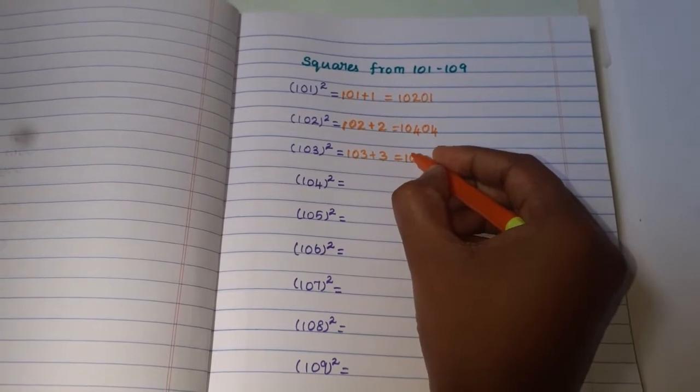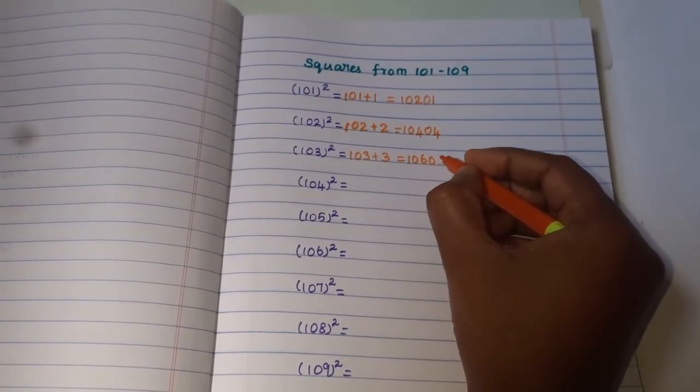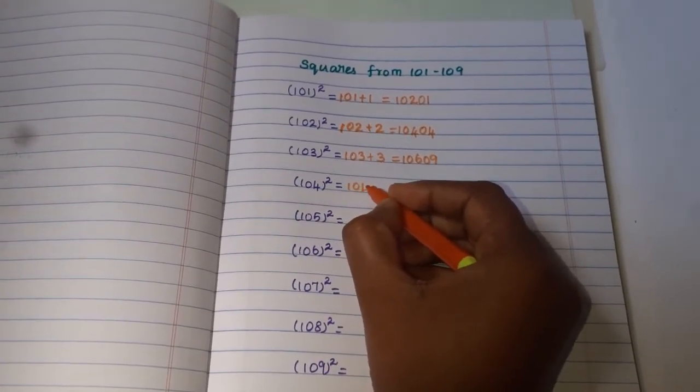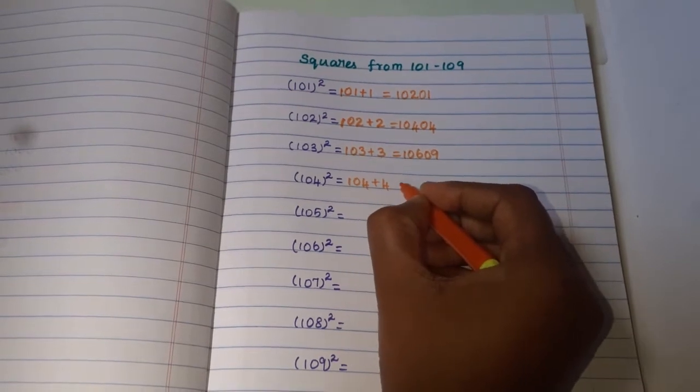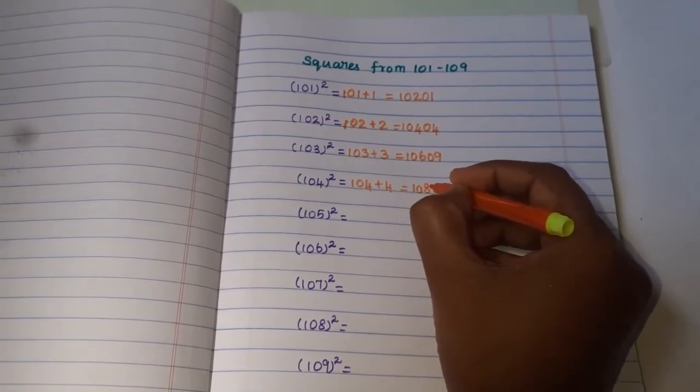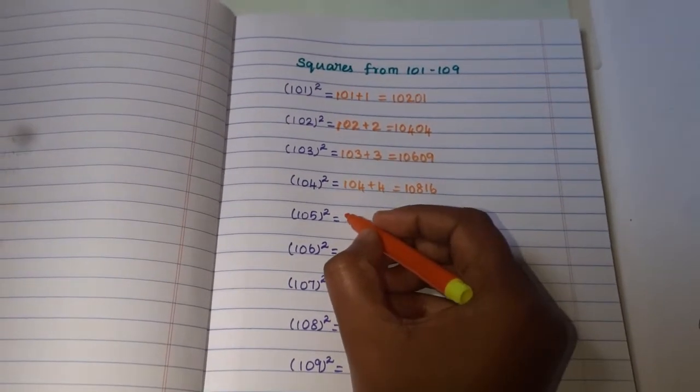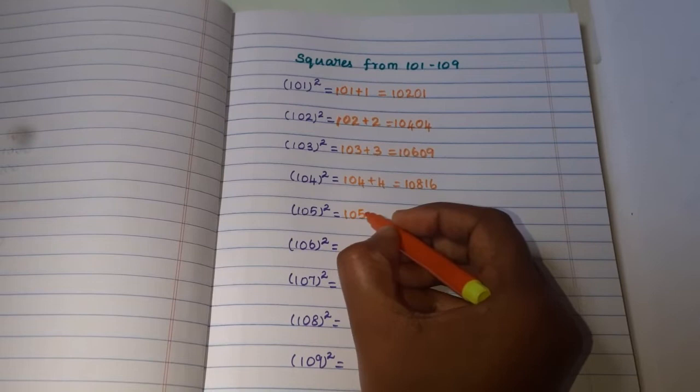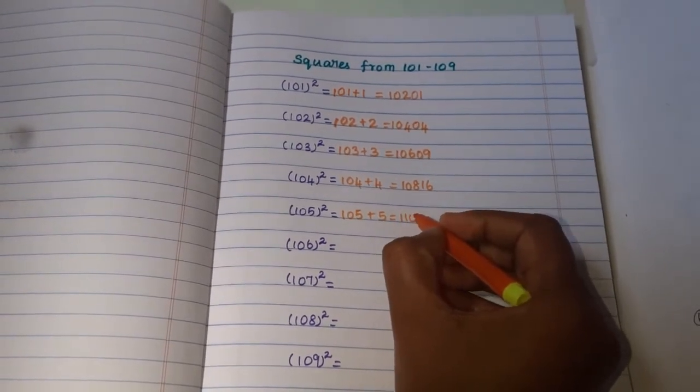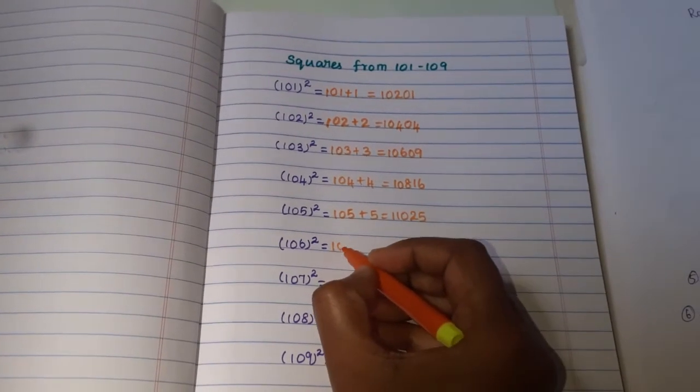Next, write 104 plus 4, and then 4 plus 4 is 108. 4 square is 16. Next, 105 plus 5 is 110. 5 square is 25.